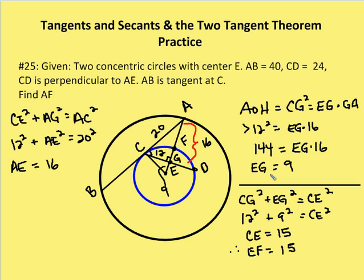The next thing we want to do is find the length — the radius of the smaller circle. We're going to do that by figuring out what CE is. CE is a radius and EF is also the radius. What we're after is EF because we can use that to figure out what AF is, because we know that AE is 25 units. So CG squared plus GE squared is equal to our hypotenuse CE squared. 12 squared plus 9 squared equals CE squared. CE ends up being 15. That also means that EF, the same radius for the same circle, is equal to 15.